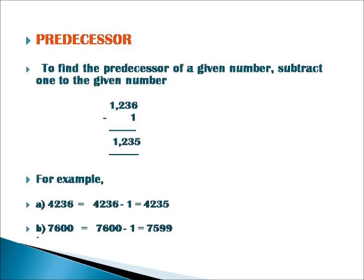The next sum is 7600. When 7600 is subtracted by 1, we get 7599. Here, 7599 is the predecessor of 7600.